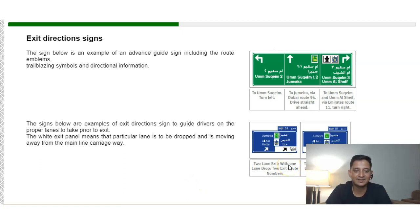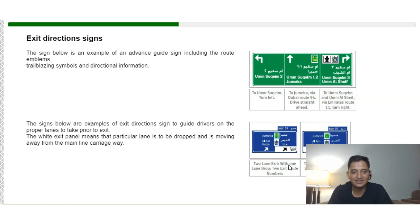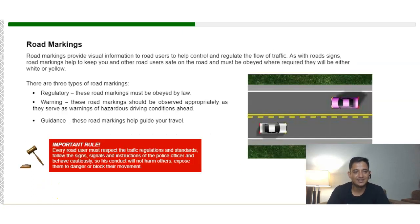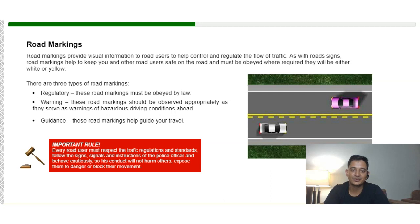Exit direction signs guide drivers to the proper lane to take when approaching an exit. The white exit panel on a sign means that particular lane moves away from the main carriageway. These road markings help guide your travel.